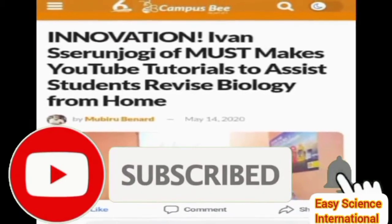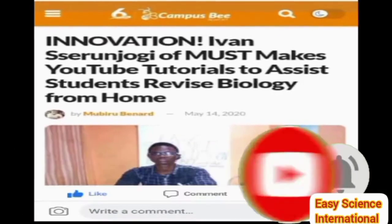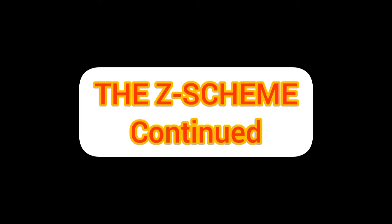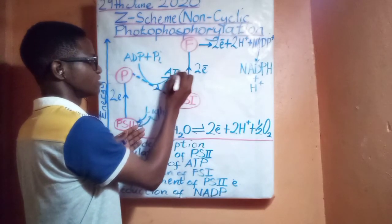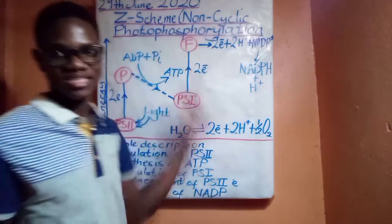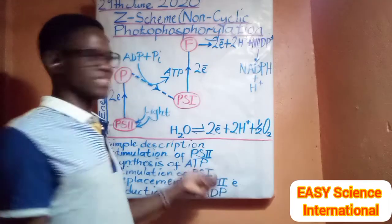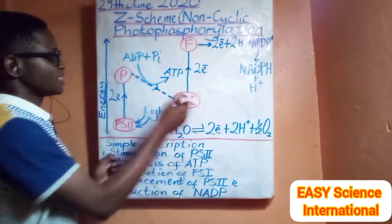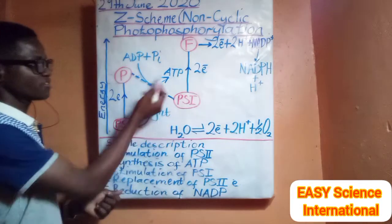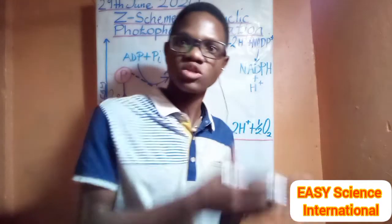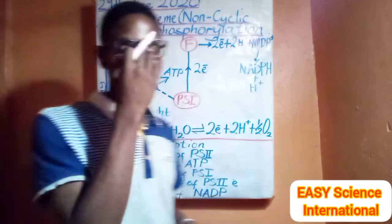This is the formation of ATP — Adenosine Triphosphate — by the process of photophosphorylation. ATP energy is formed each time the electron is passed from one electron carrier to another.